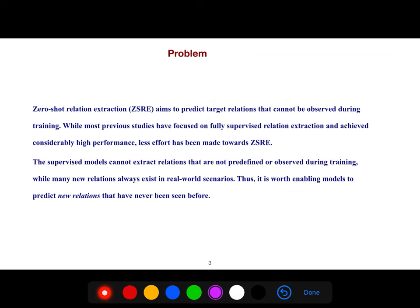What is the problem? Zero-Shot Relation Extraction aims to predict target relations that cannot be observed during training. We call them unseen data, or unseen, for example, in the context of entity linking, we say unseen entities.